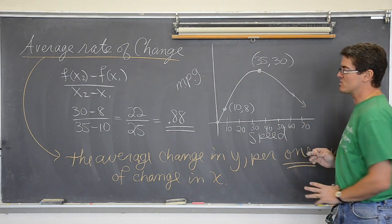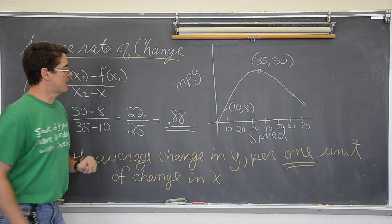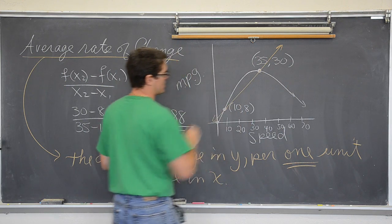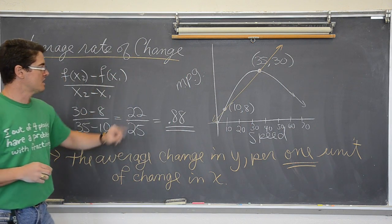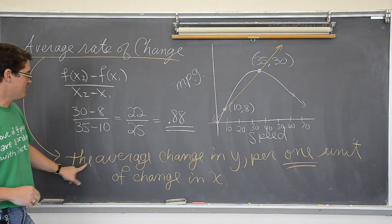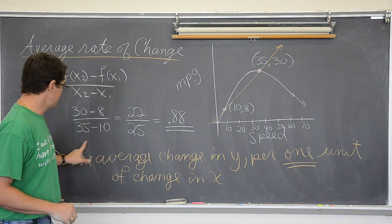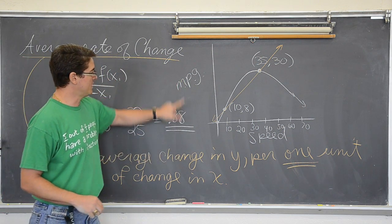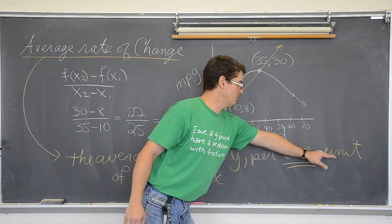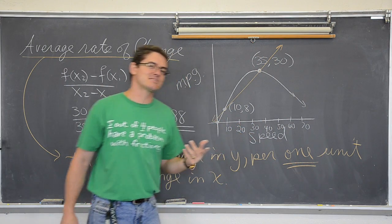What this .88 means as far as the average rate of change between these two points, estimating mileage of a car, what that says is between 10 and 35 miles an hour, the average increase in the y value is miles per gallon. So the average increase in miles per gallon, that is my change in y, per one unit of measure on the x axis, which is speed.